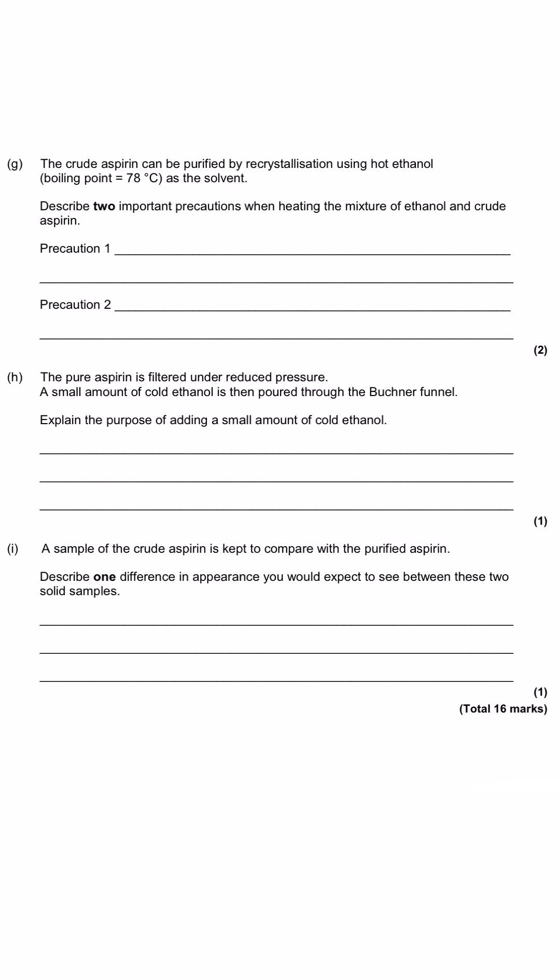The final part of this question moves on to tell us about the purification of aspirin. It tells us that we use hot ethanol to do that. The boiling point of hot ethanol is 78 degrees C. And ethanol is the solvent. I actually go into more detail about recrystallization in another question walkthrough, so don't forget to check that out. But in this question, we're asked to describe two important precautions when heating the mixture of ethanol and crude aspirin. The point here is that lots of organic liquids are going to be flammable and ethanol absolutely is flammable. And so to help protect ourselves from the ethanol catching on fire, what we need to do here is use a water bath to heat the ethanol, or maybe use a hot plate or a heating mantle or an electric heater to heat the ethanol and the reaction mixture. What you would absolutely not use is don't use a Bunsen burner. So for the first mark, you need to be communicating that as a core idea.